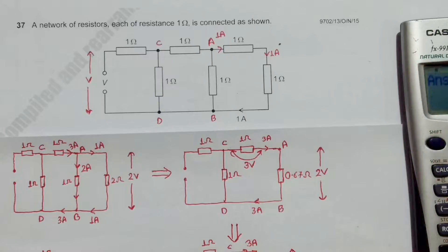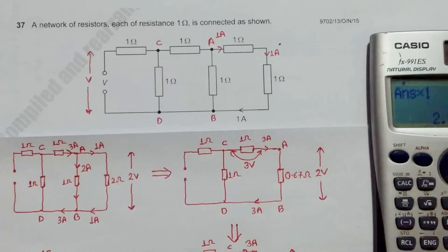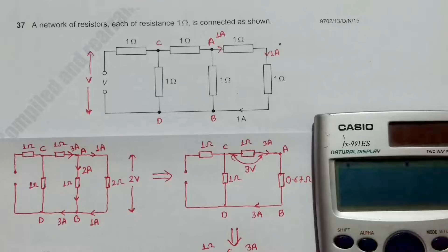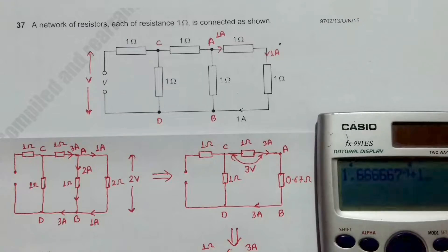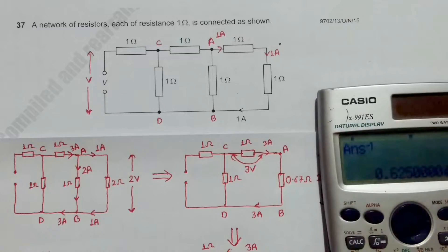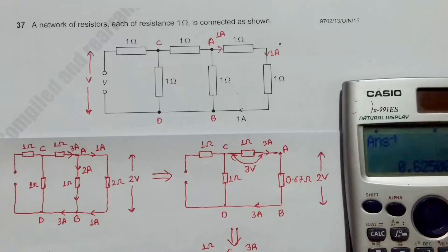Again, this 1.67 ohm resistor and the 1 ohm resistor are in parallel. The parallel combination of 1.6667 and 1 — taking reciprocals and adding, then taking the reciprocal again — gives 0.625 ohm. So we have 0.625 ohm here, with 5 volt across CD.